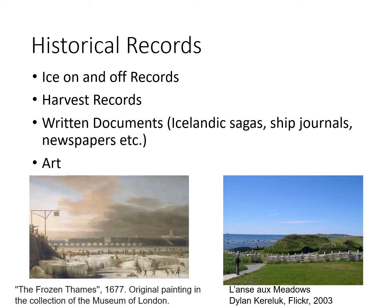Historical records are human documents that can be used to infer climate variables. For example, the painting below shows ice on the Thames River in London, England in 1677. Today the Thames River does not freeze. This painting and many others show that northern Europe was generally colder than today between 1300 and 1850. This period is referred to as the Little Ice Age.